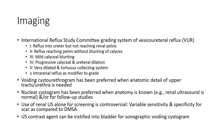Grade III: mild calyceal blunting. Grade IV: progressive calyceal and ureteral dilatation. Grade V: very dilated and tortuous collecting system, plus or minus intra-renal reflux, as modified from the grading system. A voiding cystourethrogram is performed when anatomic detail of the upper-tract urethra is needed.